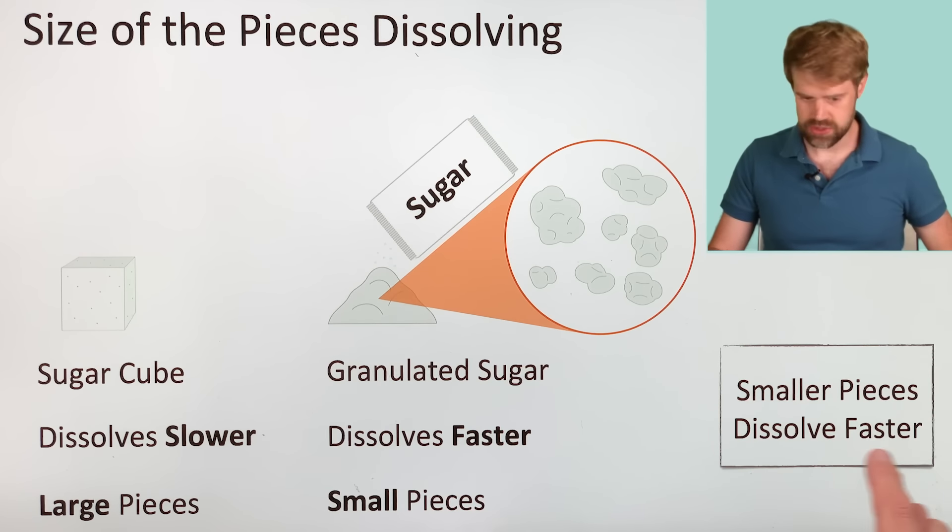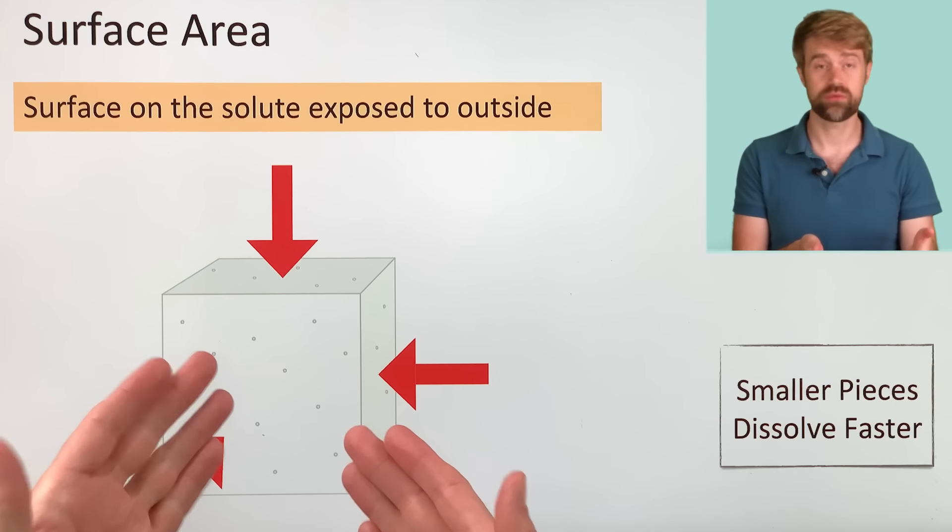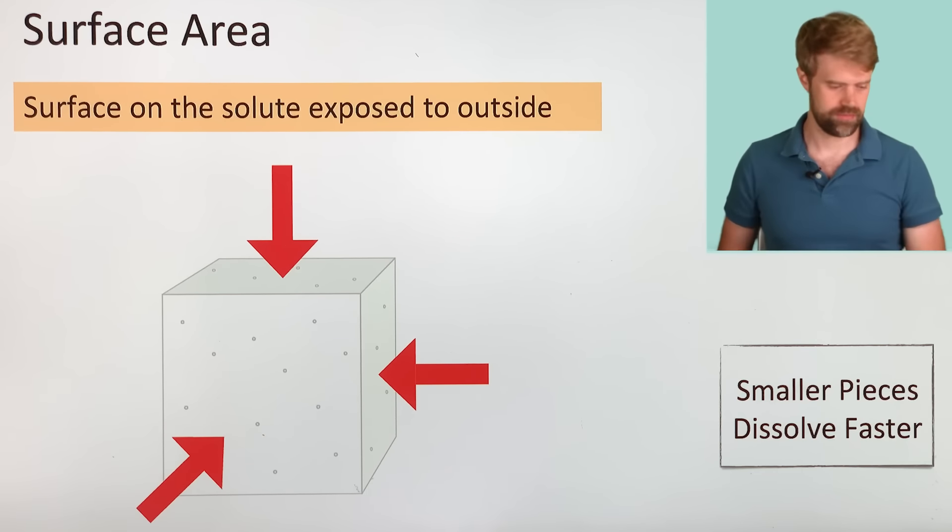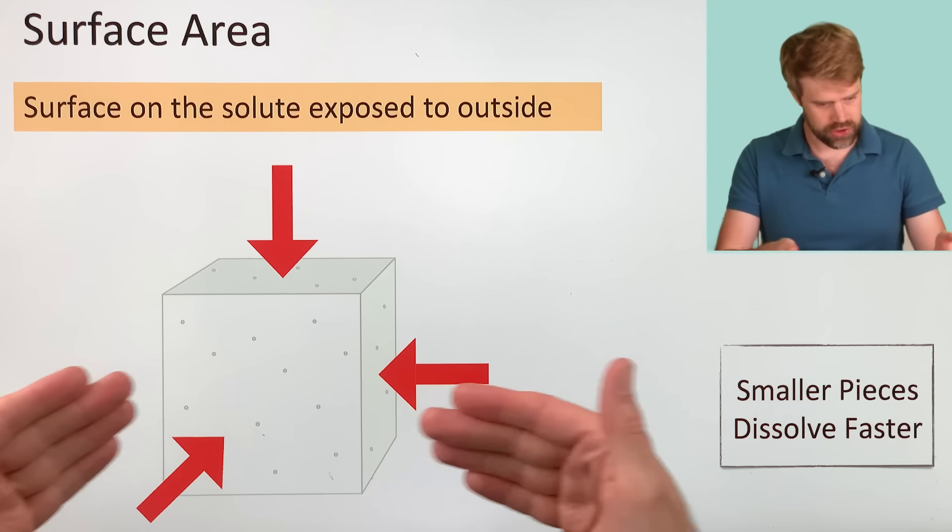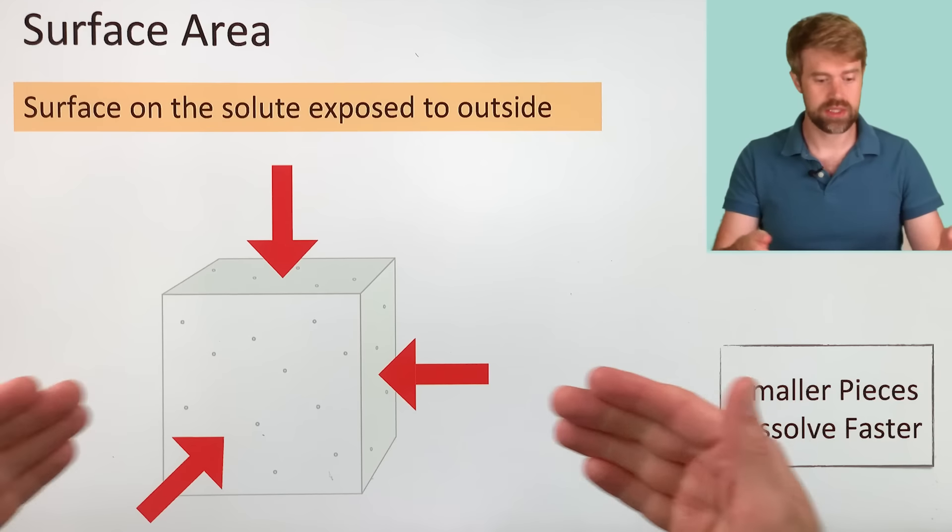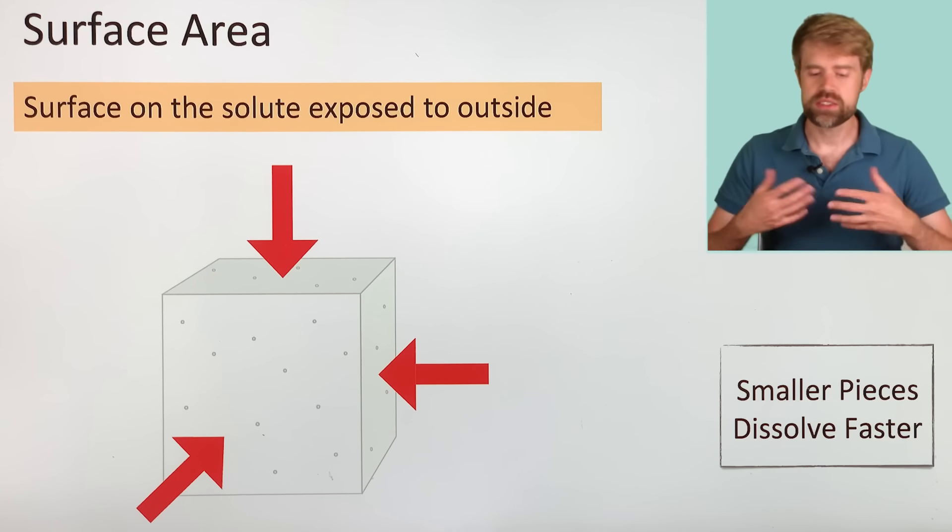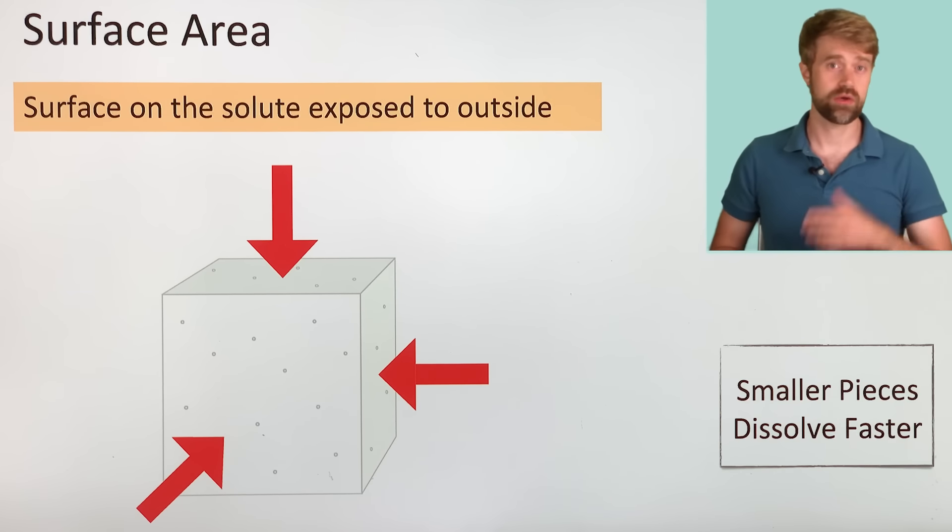Let's take a minute and talk about why this is. It really has to do with the surface area of the pieces of solute, for example, on the sugar cube. Surface area is the amount of surface on the solute that is exposed to the outside. Here, all the faces of the sugar cube are exposed to the outside. To see why surface area affects dissolving, let's take a look at a diagram of the dissolving process at the atomic level.